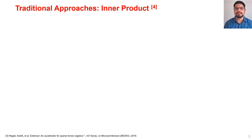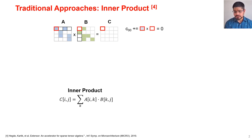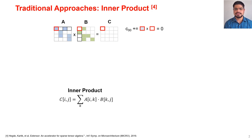There are two common approaches of performing sparse matrix multiply. The first one is the inner product approach. In this approach we perform the inner product of a row of matrix A and a column of matrix B to produce a single output element of matrix C. Since these are sparse matrices, this requires index matching. In the first cycle we read the non-zero from either A or B, whichever has the smaller index. In this case this is the non-zero from A, and since there is a corresponding zero in matrix B we do not perform any multiply-accumulate.